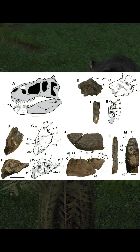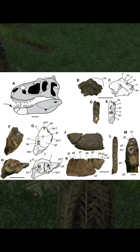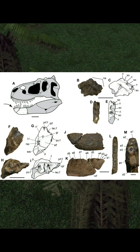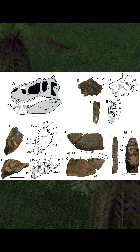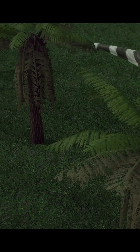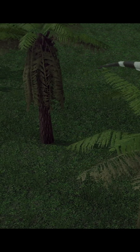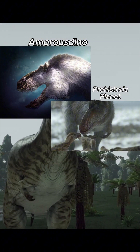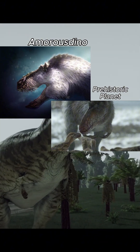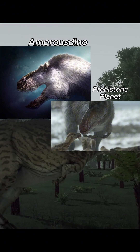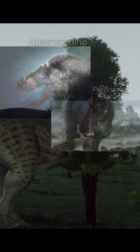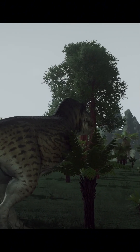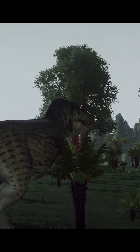Take my favorite dinosaur, Nanooksaurus. Nanook has very few fossils to its name, but we have enough to know it was a Tyrannosaur. Using that, we can get stunning reconstructions like this that use things like T-Rex, Tarbosaurus, and Desplatosaurus as reference.